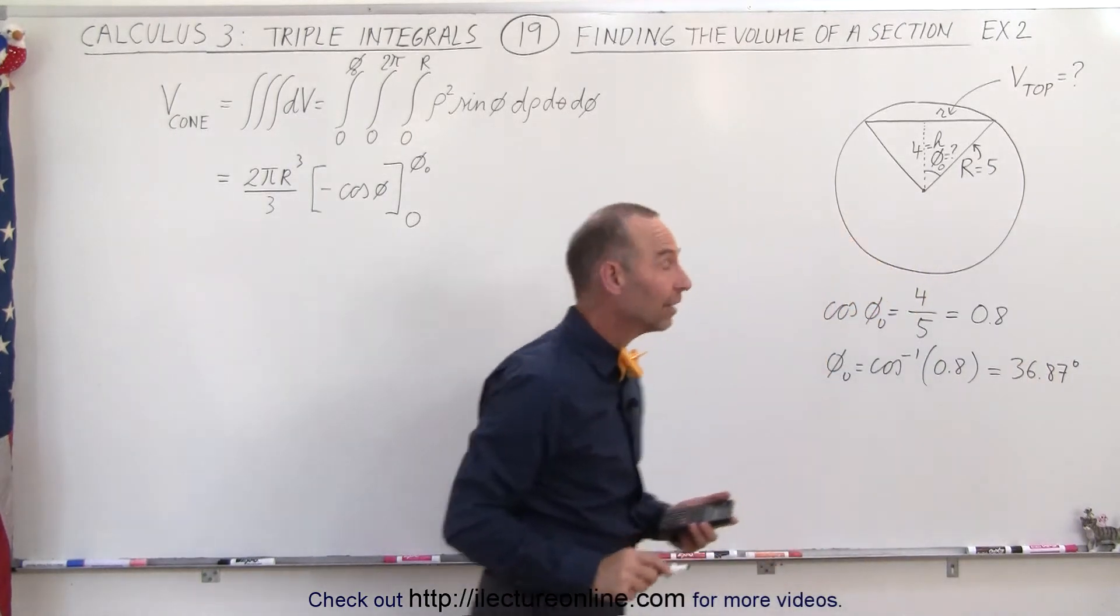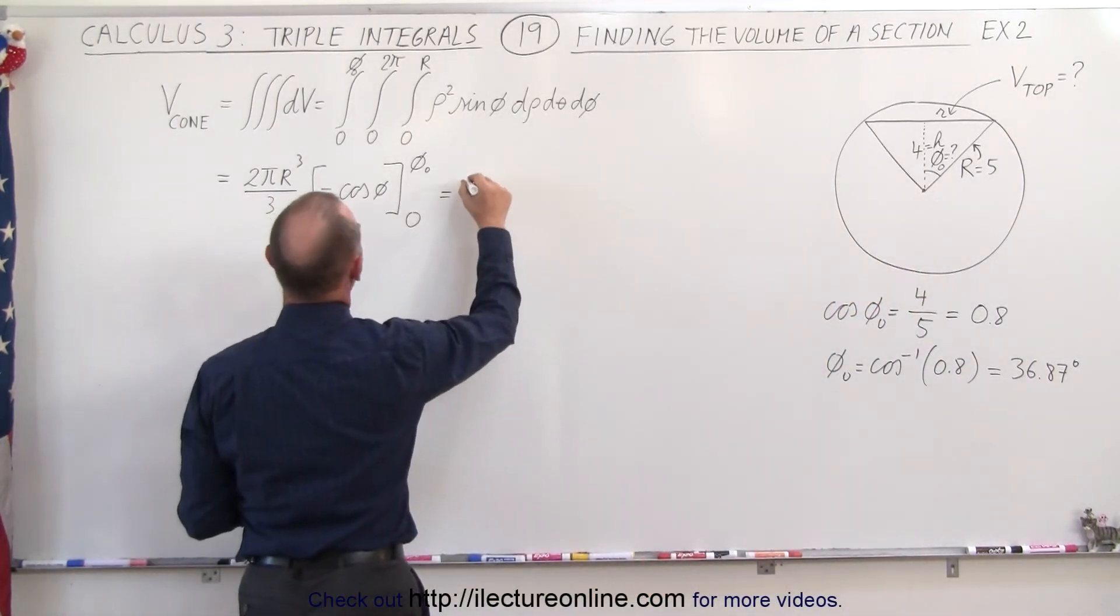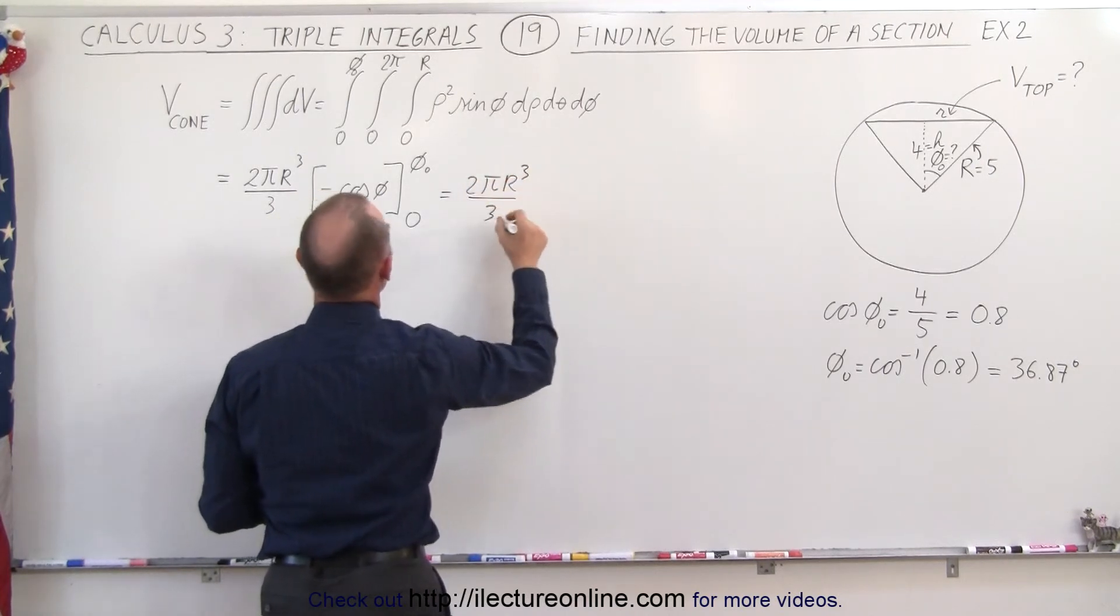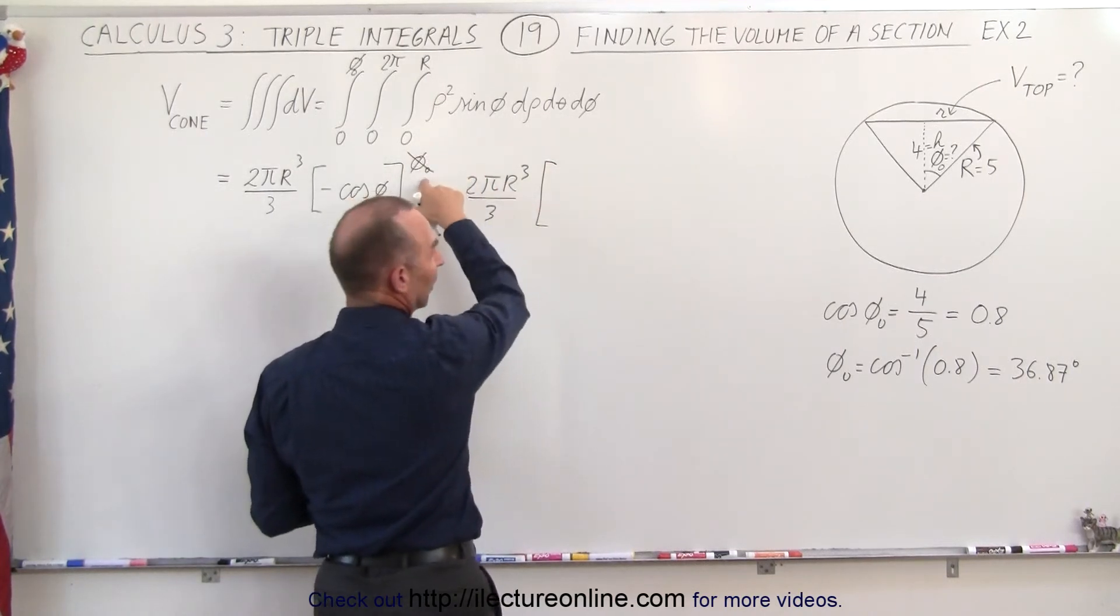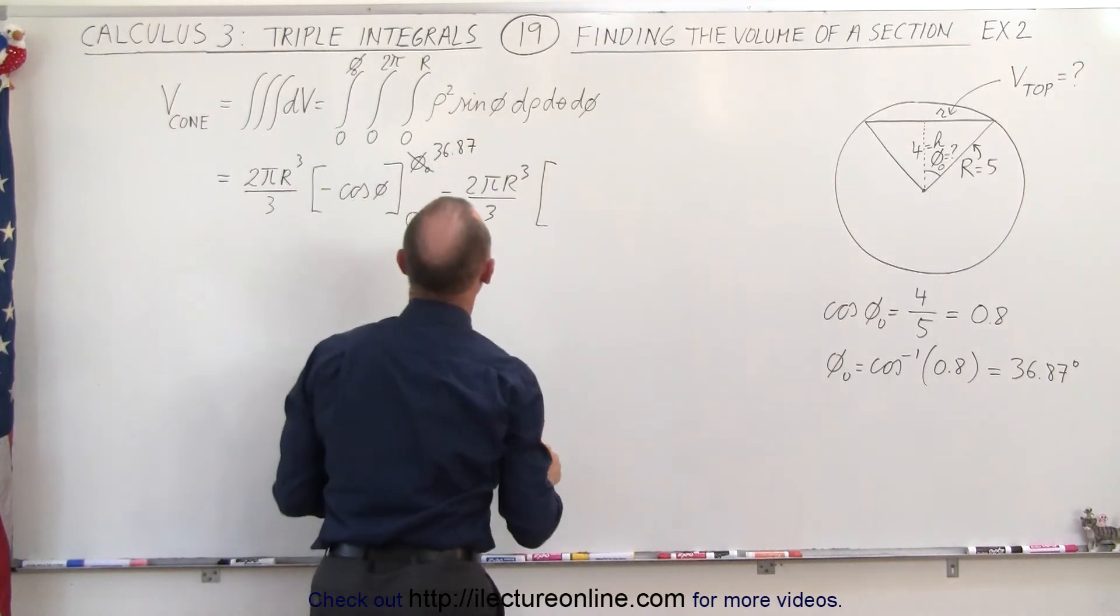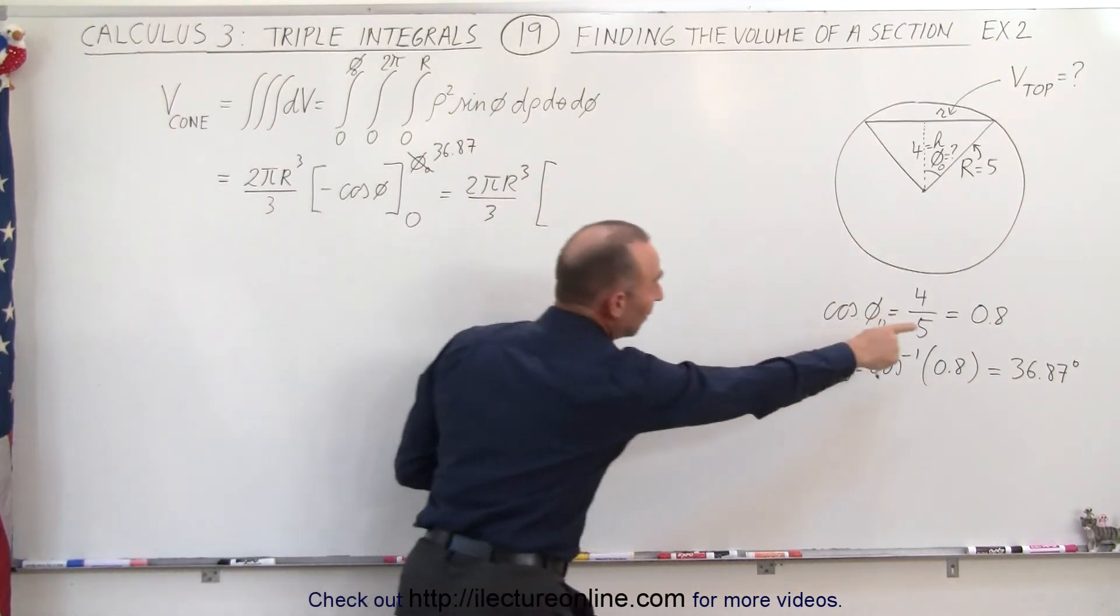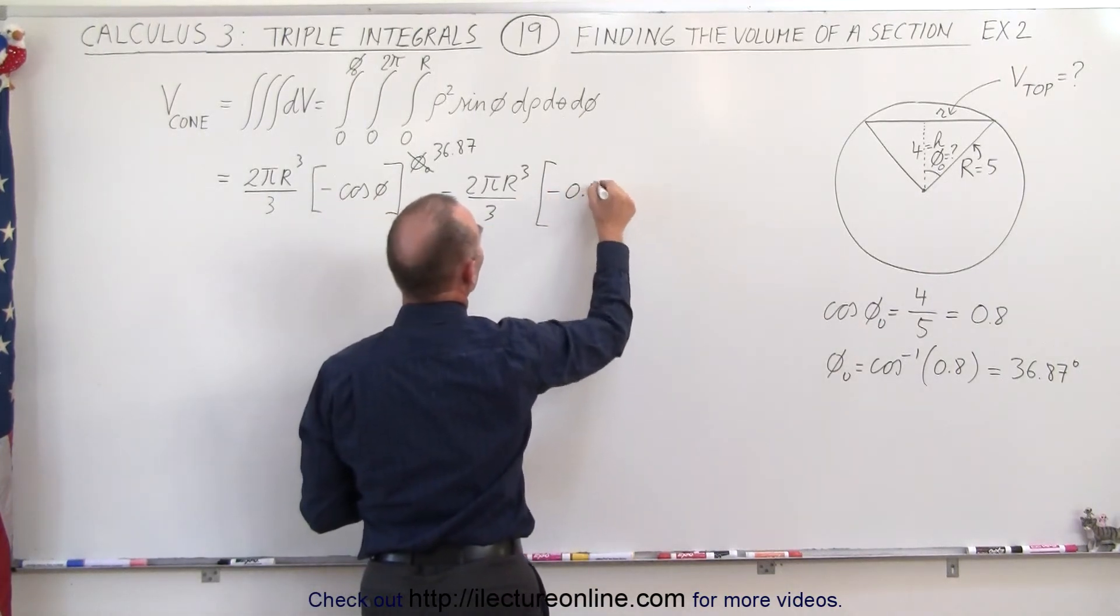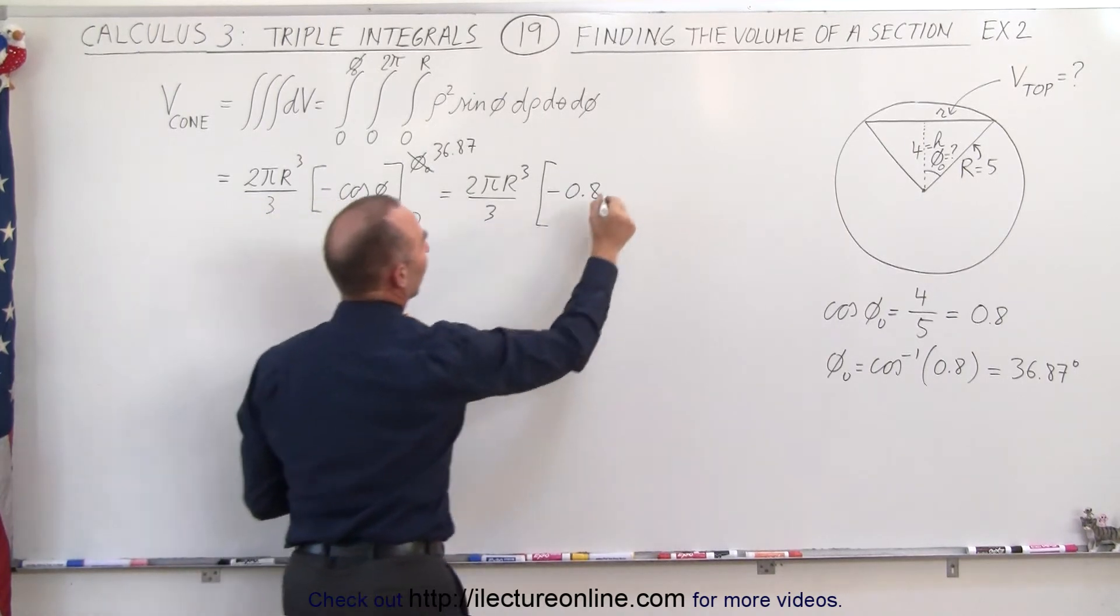So now that we have that, we can go ahead and plug that in here. So this would be equal to 2πr³/3 times when we plug in. And so what we're going to do is replace this now by the angle of 36.87 degrees. When plugging the upper limit, we get the cosine of that angle, which will be 0.8, but we have a negative sign in front, so negative 0.8. And when we plug in the lower limit, we subtract the negative, which becomes a positive.